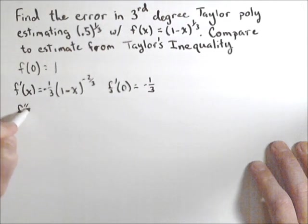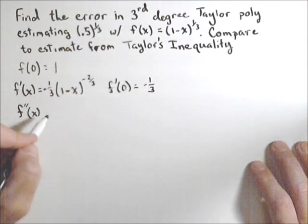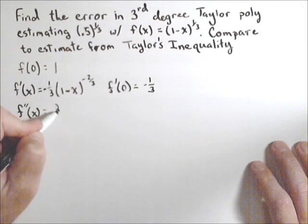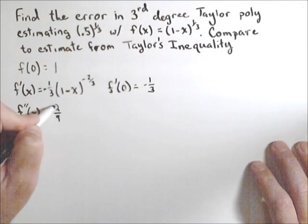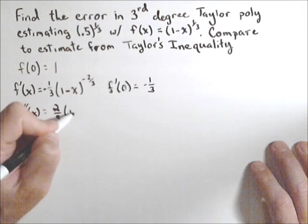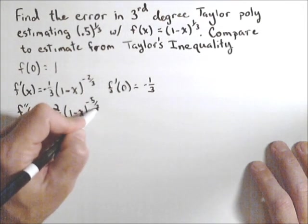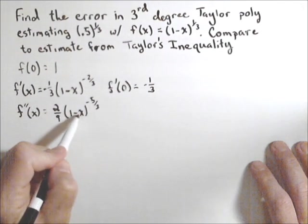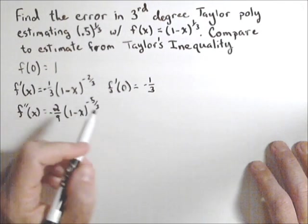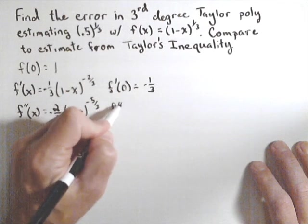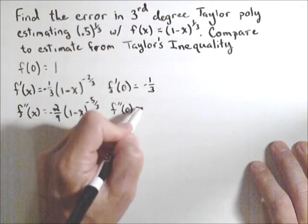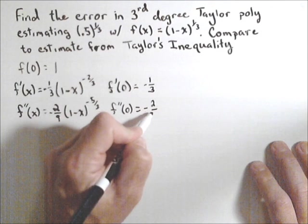f''(x) is going to be positive 2/9, bringing the exponent down, times (1-x)^(-5/3), again times a negative 1 because of the chain rule, making that negative. So f''(0) is -2/9.